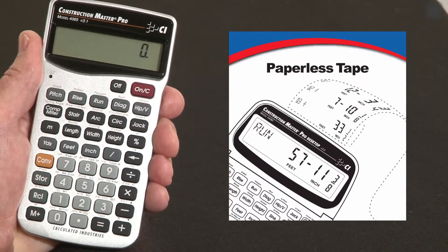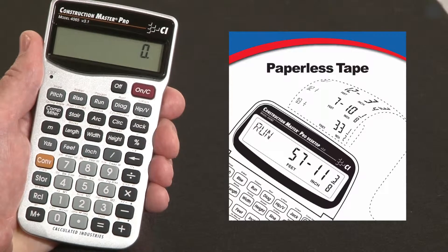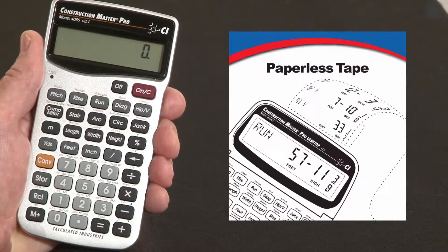One of the primary uses of the Construction Master is for adding up strings of dimensions. Some guys will re-enter them two or three times just to be sure they get the same answer. That's smart, but it's a little bit of extra work.